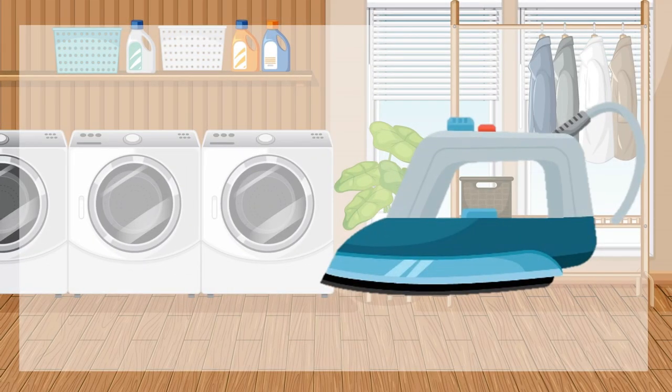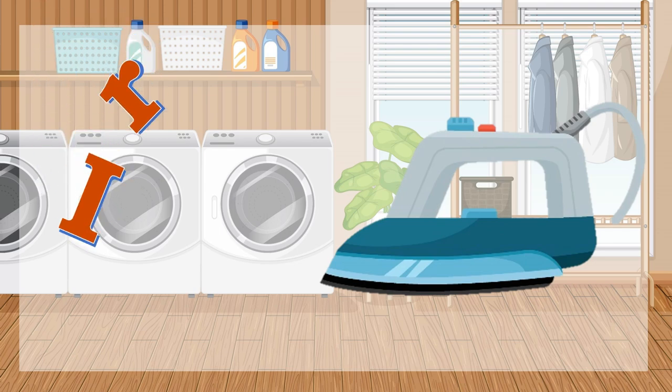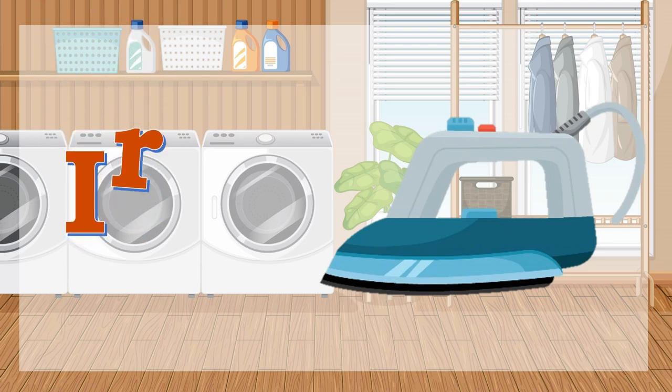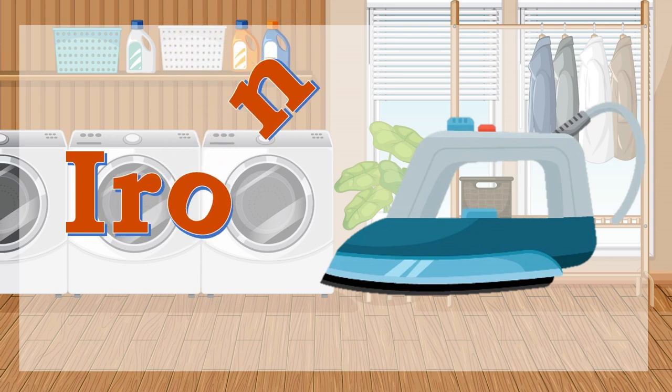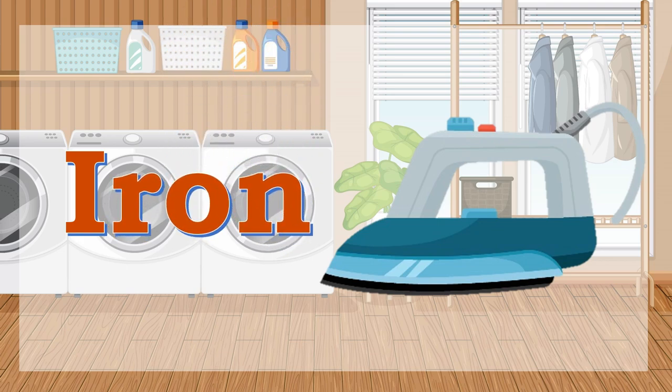How about this one? What picture do you see? That's right, it's an iron. Let's spell the word iron. I, R, O, N — iron.